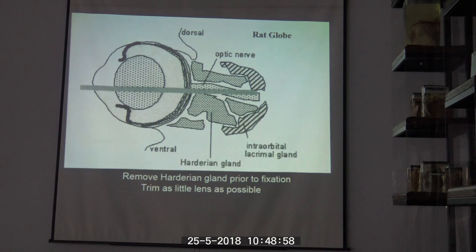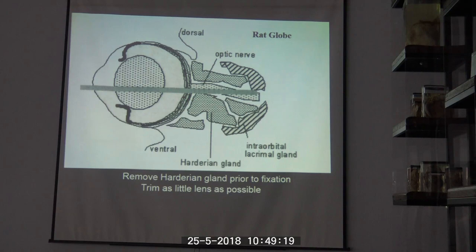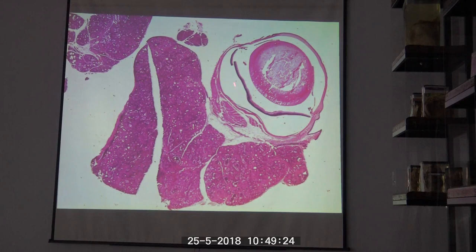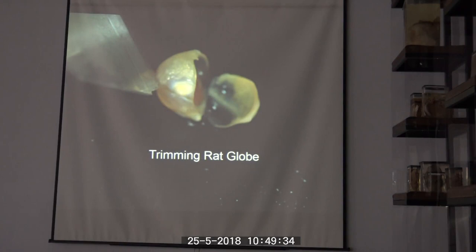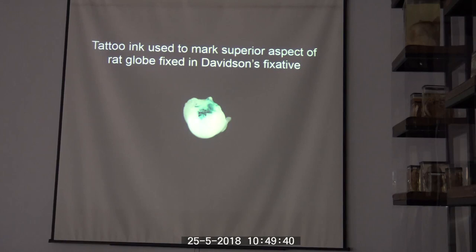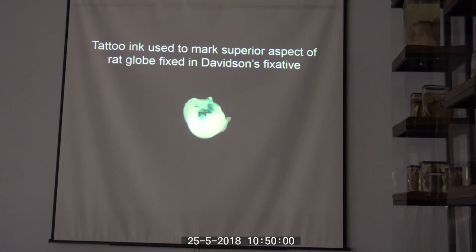For rats, mice, and other animals with very small globes, you could theoretically make a section all the way through. It is also important to remove all glands in the periocular region to allow best fixation of the retina; otherwise there is a very good chance of artifactual retinal detachment. You could trim the globe of a rat or mouse and put the whole thing in the cassette, then at the time of sectioning simply go deeper into the block until the lens is reached.